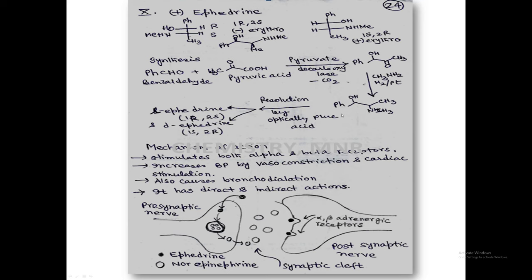This molecule has a basic functional group, so it can be separated using an optically pure acid. After resolution, L-ephedrine and D-ephedrine can be separated. D-ephedrine has absolute configuration 1S,2R, and L-ephedrine has the absolute configuration 1R,2S. With this, the synthesis of plus-ephedrine is complete.